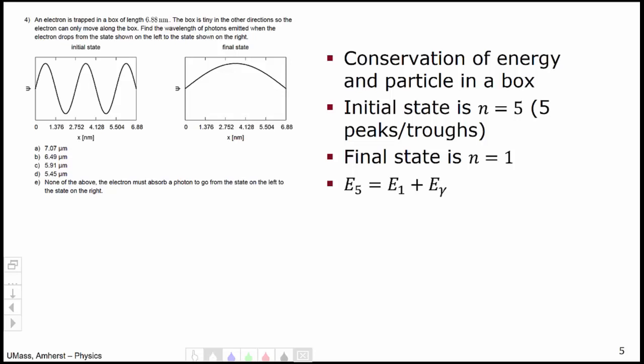So my conservation of energy equation reads e5 equals e1 plus the energy of the photon, e gamma. The energy of the fifth energy state is h squared 5 squared over 8 mL squared. The energy of the first energy state is h squared 1 squared over 8 mL squared. Subtracting across, we get h squared times 25 minus 1 over 8 mL squared. We know it's an electron, so that gives us the mass 9.11 times 10 to the minus 31 kilograms. The length of the box 6.88 nm is given in the problem and h is a constant, giving us the energy of the emitted photon.